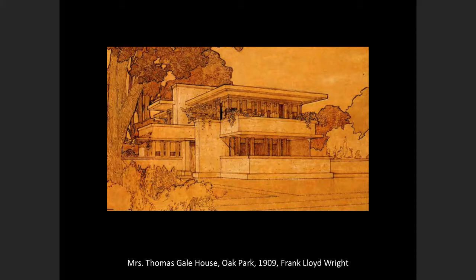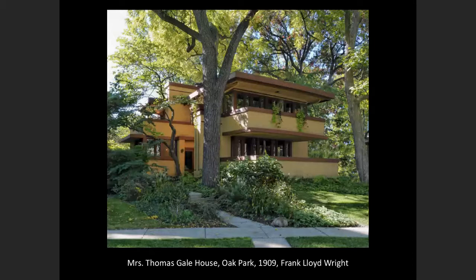They really liked the geometries and massing of these houses. Here we see the Gale House as seen on our walking tour, with its flat cantilevered roofs and horizontal lines that would go on to directly influence European modernists.